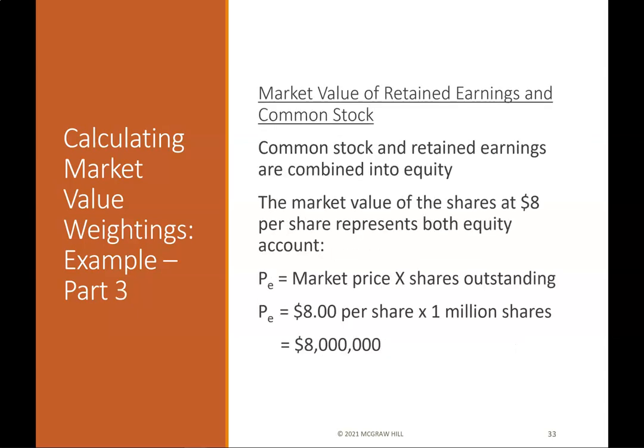Calculating market value weightings — example part 3 (common equity): Common stock and retained earnings are combined into equity. The market value of the shares at $8 per share represents both equity accounts. PE = market price × shares outstanding = $8 per share × 1,000,000 shares = $8,000,000.